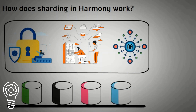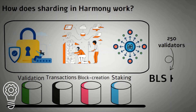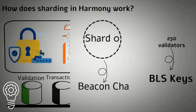Users can choose the shard they want, which distributes the network's workload. Validation, transactions, block creation, and staking are all done separately on each shard. Harmony currently has a limit of 250 validator slots per shard, known as BLS keys. If needed, the number of shards and validators can increase to meet network demand in the future. Shard zero is the beacon chain and acts as an information relay between shards one, two, and three. No matter the shard used, transaction times will be roughly two seconds.